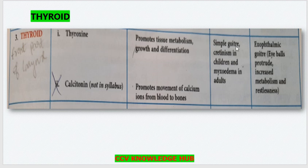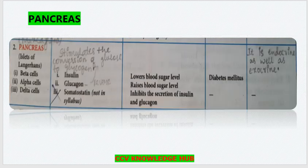Myxedema means enlargement of the thyroid, and cretinism involves dwarfism and mental retardation. Whereas myxedema also presents as swelling of the face and hands with sluggishness. The next gland is the pancreas.